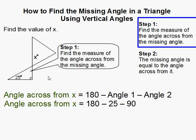So to find the angle across from our missing angle, we simply subtract the two given angles from 180 degrees. Because remember that all of the angles inside of a triangle always add up to 180 degrees. So I substitute 25 for angle 1 and 90 for angle 2.